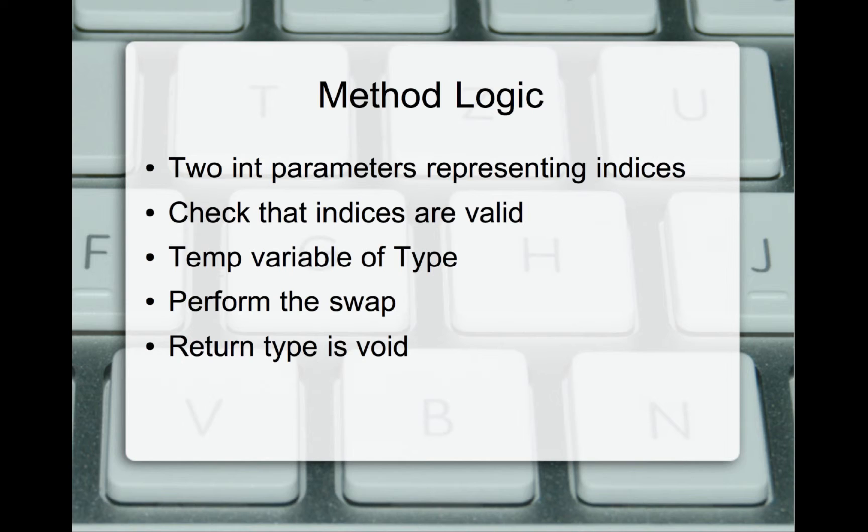Because we're dealing with our generic list that we have built ourselves, we want to make sure those indices are valid. If we're using something like a pre-built data type, like a Java array list or a C array, we don't have to check that validity because it's already built into the type structure. But since we're our own data types, we have to verify they're valid. We need a temp variable of type. We perform the swap, and it's a void type because it doesn't return anything back to us.